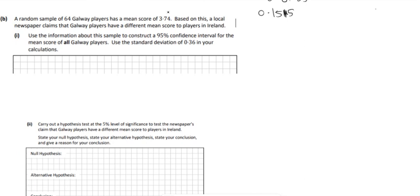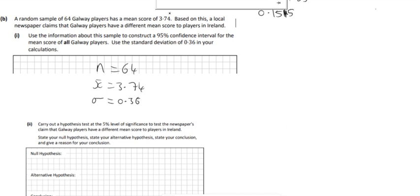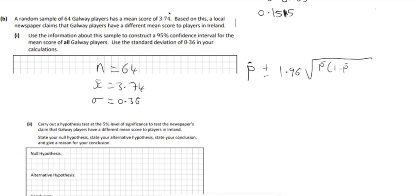For part (b), there is a random sample of n = 64. The sample has a mean score of 3.74. Using the standard deviation of 0.36, we construct a 95% confidence interval. The formula uses z = 1.96 for a 95% interval, and we substitute the values in.